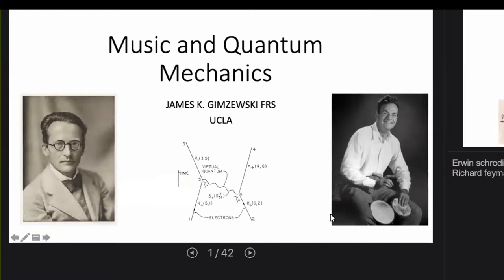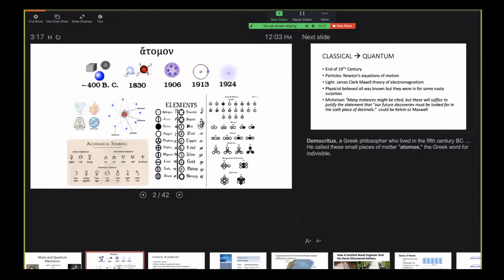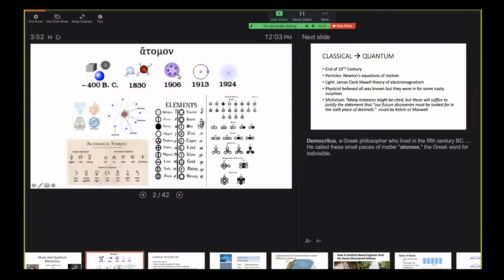Over the years there have been many different theories around the concept of atoms. In the fifth century BC, Democritus, a Greek philosopher, proposed that matter was made of small indivisible pieces and called that 'atomos' — the Greek word for indivisible. Since then a number of theories have come up for atoms involving their constituent components: electrons, protons, and neutrons, such as the plum pudding model.